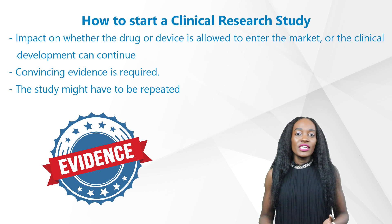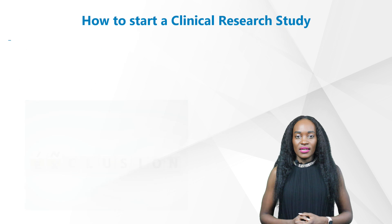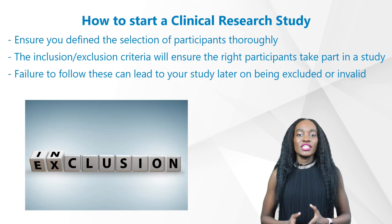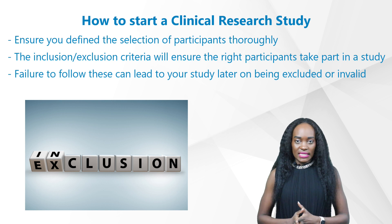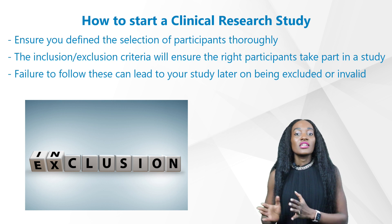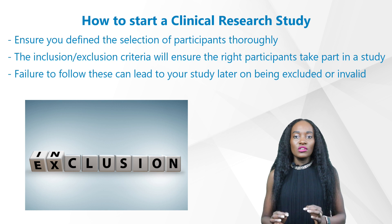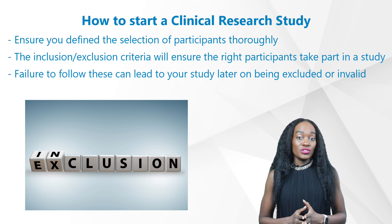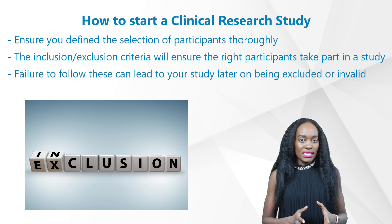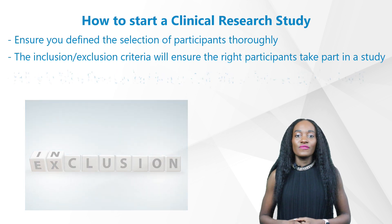Why is this important? Should the study design not support drawing meaningful conclusions, the study might have to be repeated. Now that you've successfully created your study plan, ensure you have defined your selection of participants thoroughly — this will be the inclusion and exclusion criteria. The inclusion and exclusion criteria will ensure the right participants take part in your study. Failure to follow these can lead to your study later being excluded or rendered invalid.